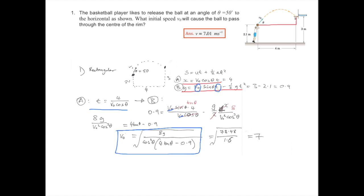And you substitute in g gravity, theta, 50 and you get the final answer is 7, so the initial speed must be 7 meters per second. Thank you.